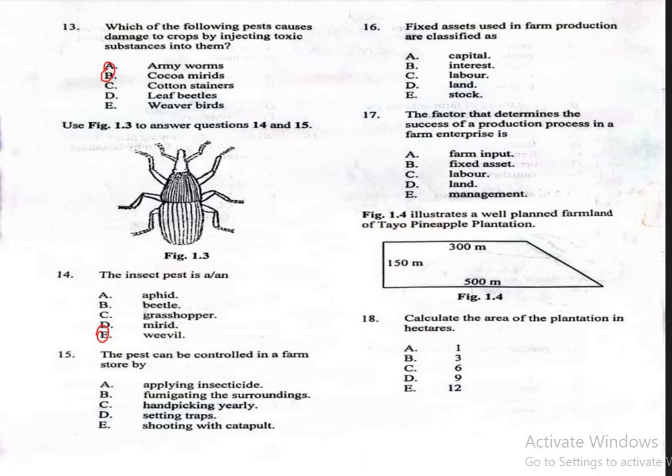Question 15 says, The pest can be controlled in a farm store by: A. Applying insecticide, B. Fumigating the surroundings, C. Hand-picking yearly, D. Setting traps, E. Shooting with catapult. The correct answer is just to apply insecticide, which is option A. Weevils and other storage pests can be controlled by applying insecticides in the farm store.